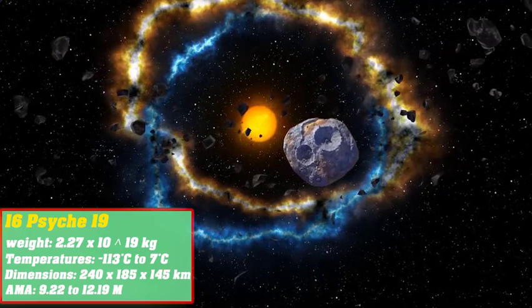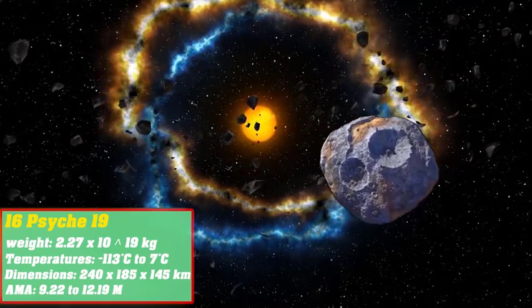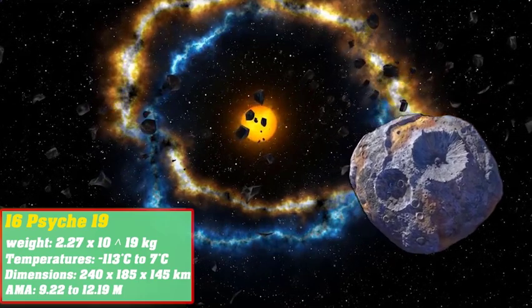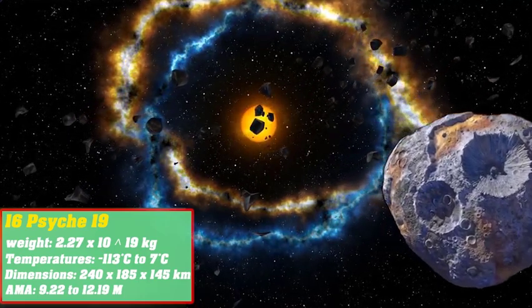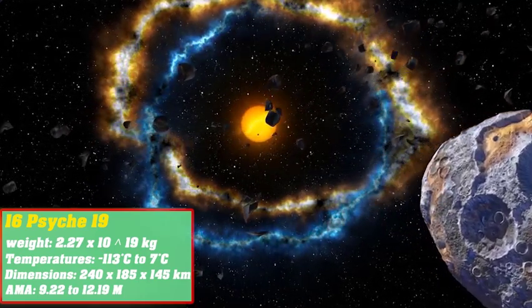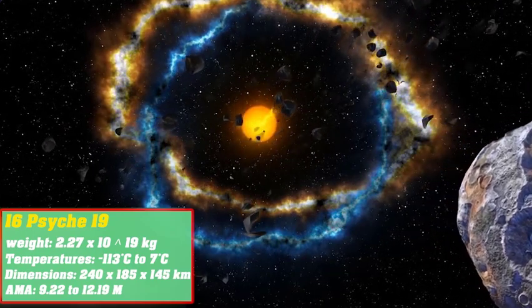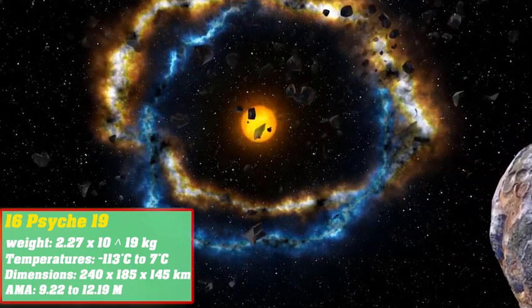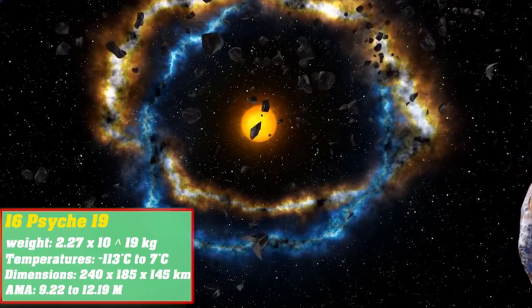However, Psyche is not part of a group of asteroids at all. One hypothesis is that the Psyche forming impact occurred very early in the solar system and that all other debris was crushed by the subsequent collision.